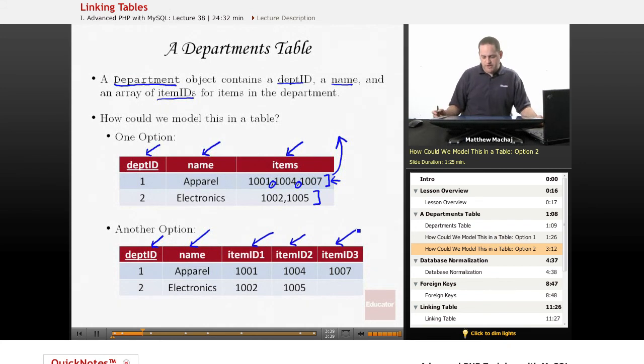In this particular case, the first item, if it was the same exact data as up here, it would have three values, 1001, 1004, 1007. And so all of those columns would be filled up.